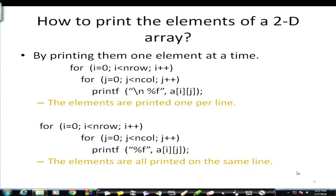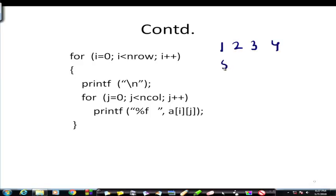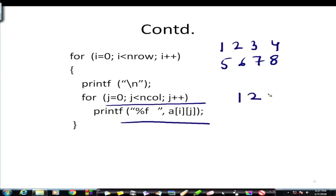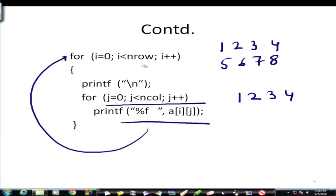A better approach is to print elements within the inner loop without backslash-n, but after each row — when the inner loop exits — print a backslash-n. So '1 2 3 4' is printed, then a newline, then '5 6 7 8'. This is a better way of printing a 2-dimensional array so that it visually looks like a matrix.